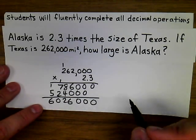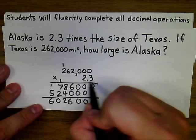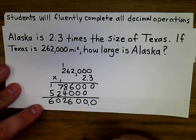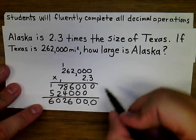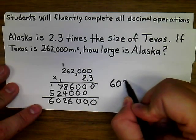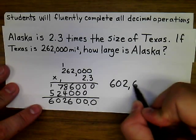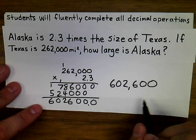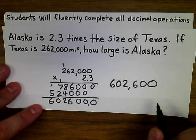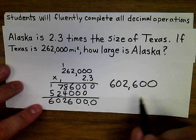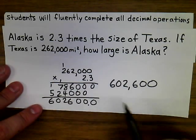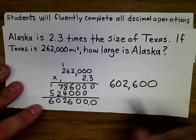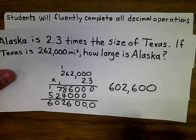We need to make sure we look carefully at the comma and the decimal point so we don't mix them up. There is only one decimal place in 2.3, so we place one decimal place in our product. The correct answer is 602,600 square miles — the approximate size of Alaska, which is about 2.3 times the size of Texas. That's a reasonable answer.